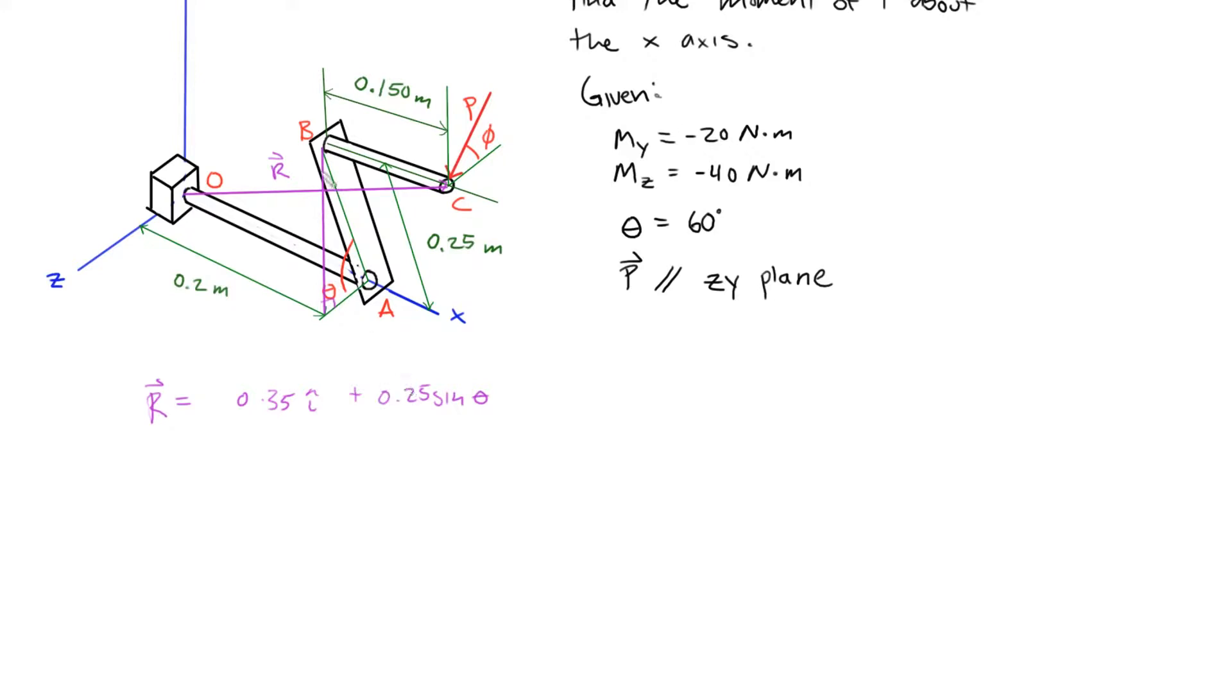The y component is actually this side of the right triangle. The hypotenuse is 0.25 as given by this dimension here, and we're given this angle theta, which is 60 degrees. So that is the y component of this position vector. Similarly, we can say that the k component is 0.25 cosine theta k hat.